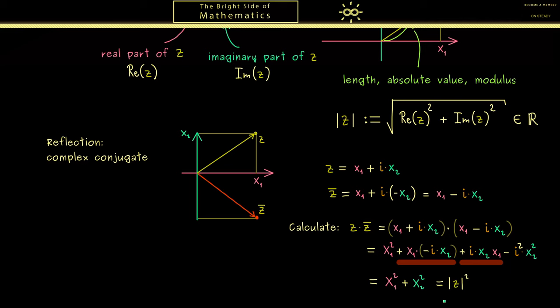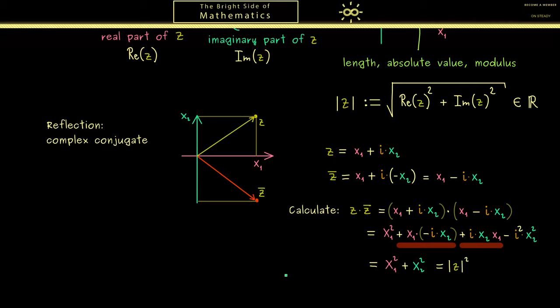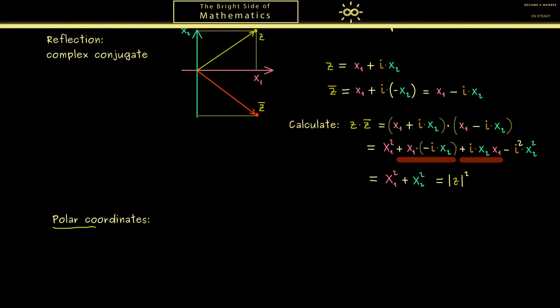And you might already see this a little bit in our next part when we talk about polar coordinates. Indeed these here can be very helpful when you need to multiply complex numbers. We can use the picture from before because we already have one half for the polar coordinates.